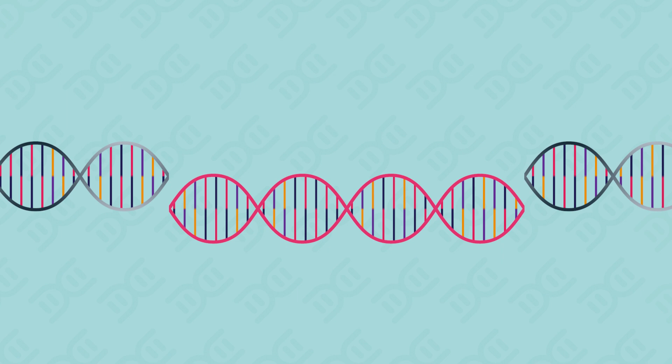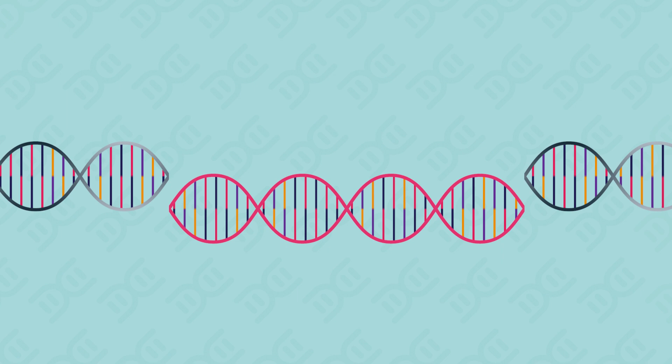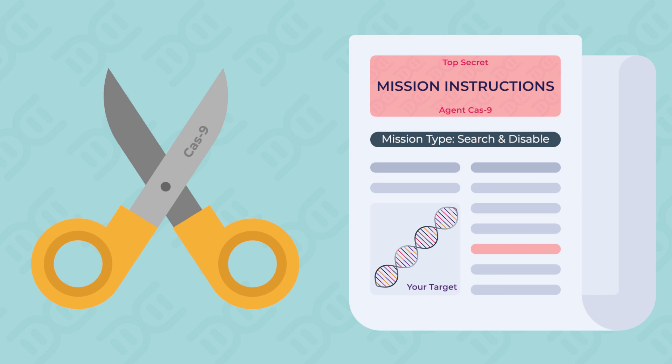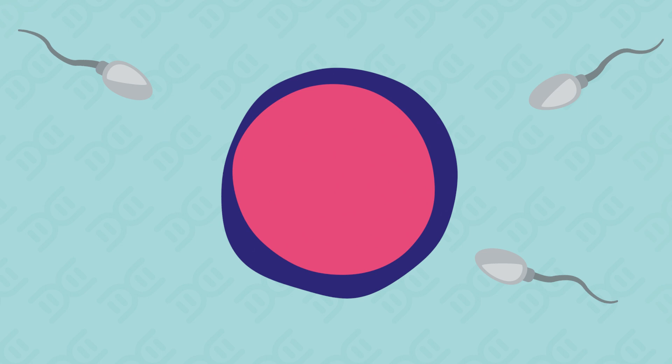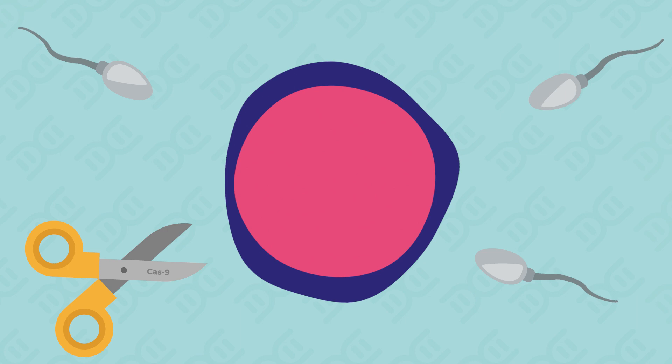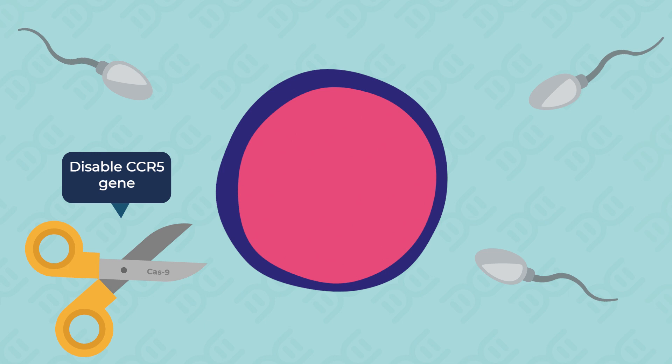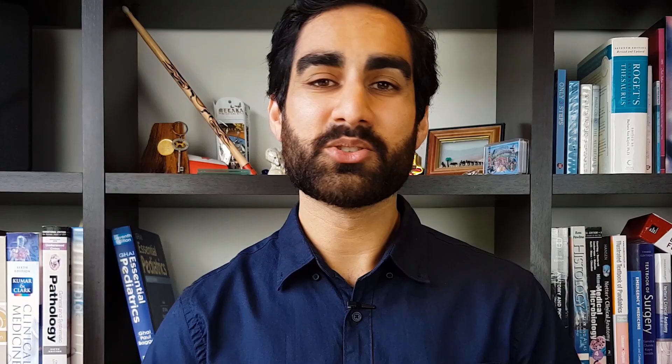Once the DNA is cut you can either leave it or add genetic material back in. The name of the scissors is Cas9, an enzyme that can bind to DNA and snip it depending on the instructions that you provide. For example, in the case of the CRISPR babies, Dr. He took sperm from an HIV positive father and an egg from an HIV negative mother. During IVF he added in this Cas9 enzyme that was programmed to disable a gene called CCR5. It is known that HIV uses this CCR5 protein as a backdoor to infect immune cells.